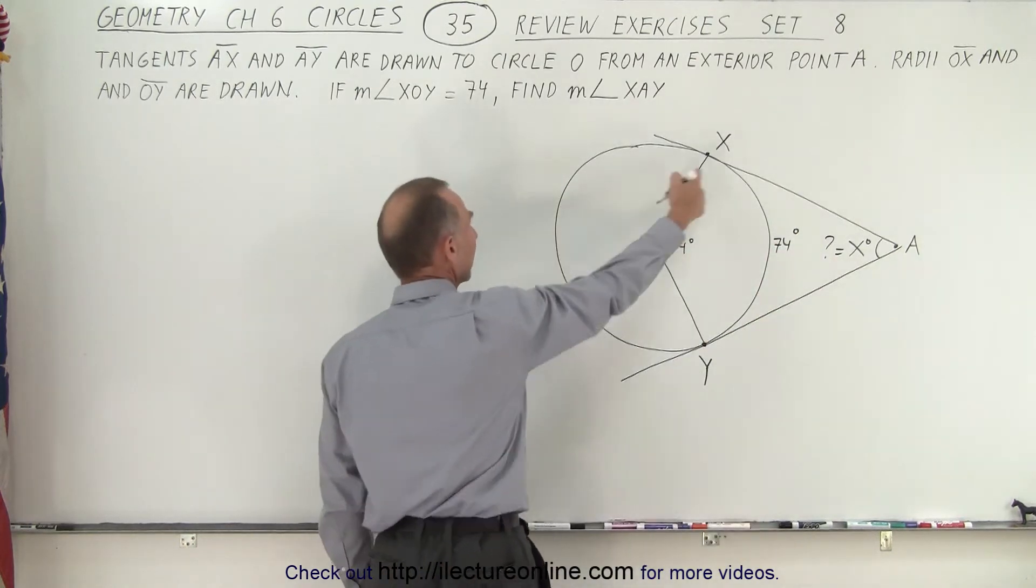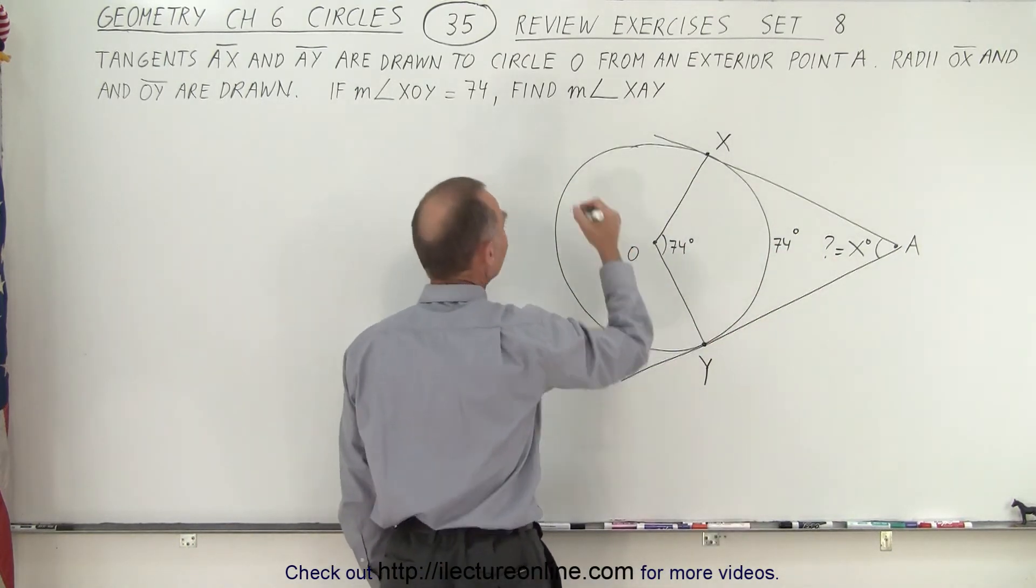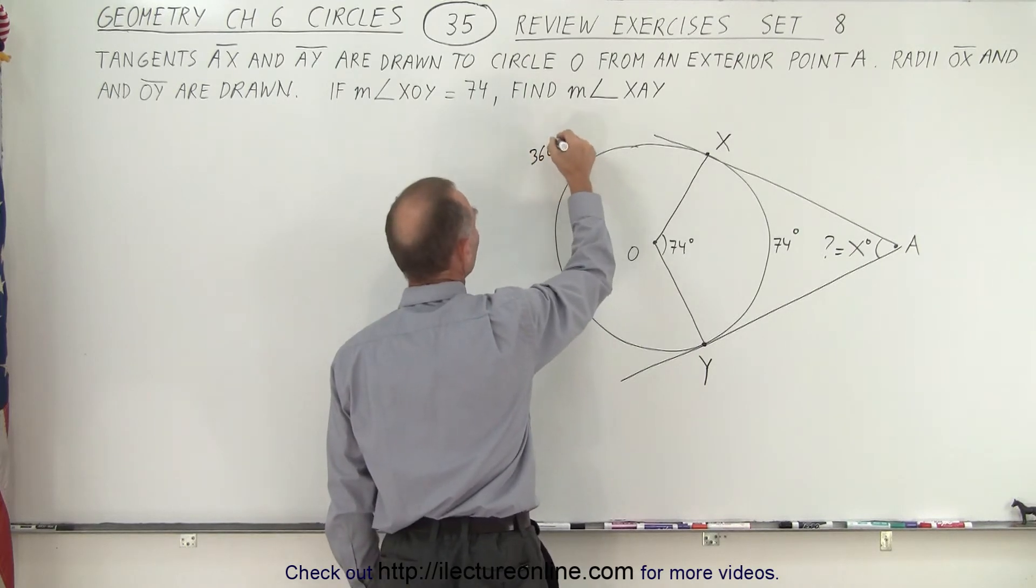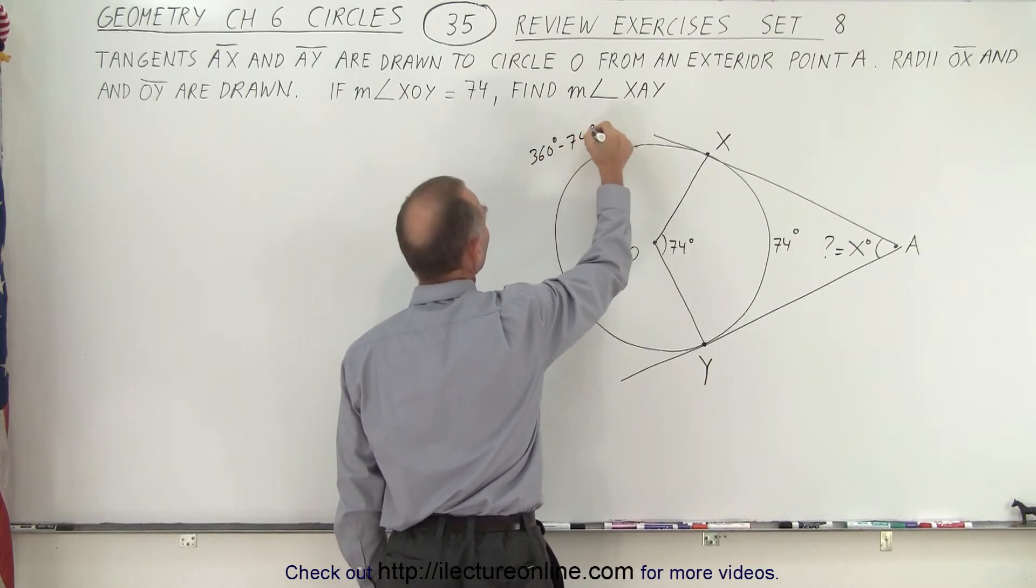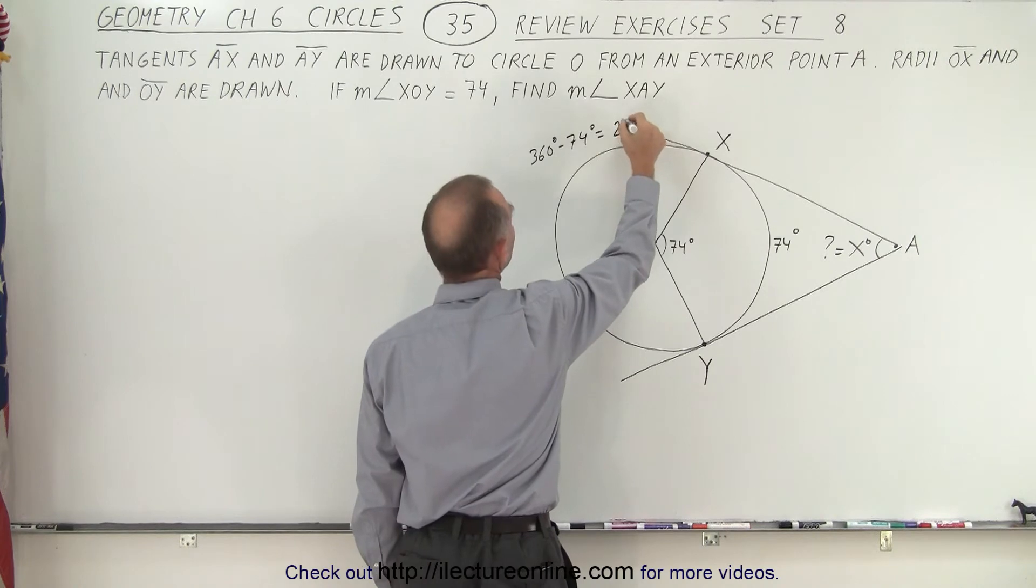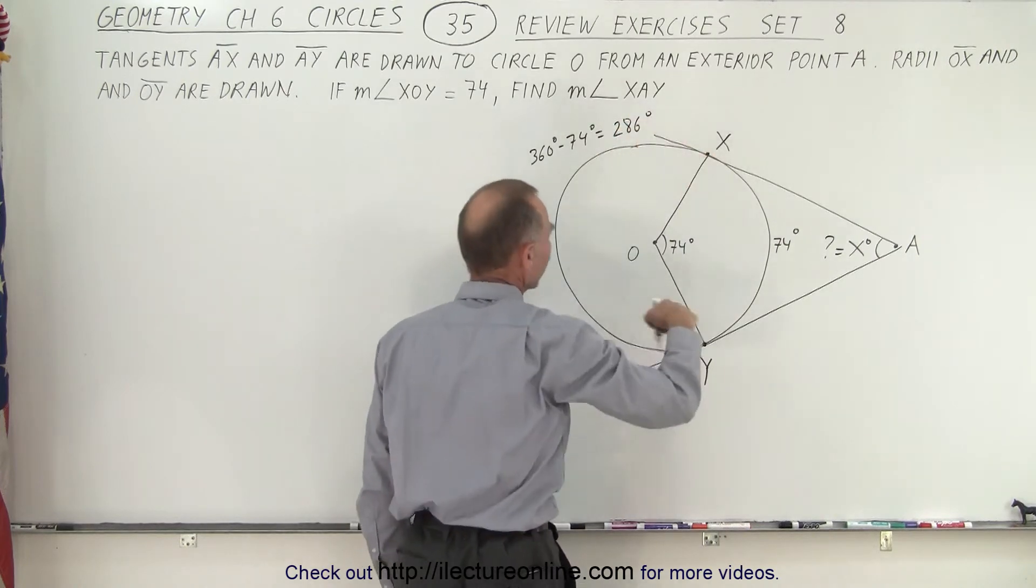Then on the other side, the remainder of it must be 360 minus 74, so that would be 360 degrees minus 74 degrees, which is equal to 286 degrees for this right here.